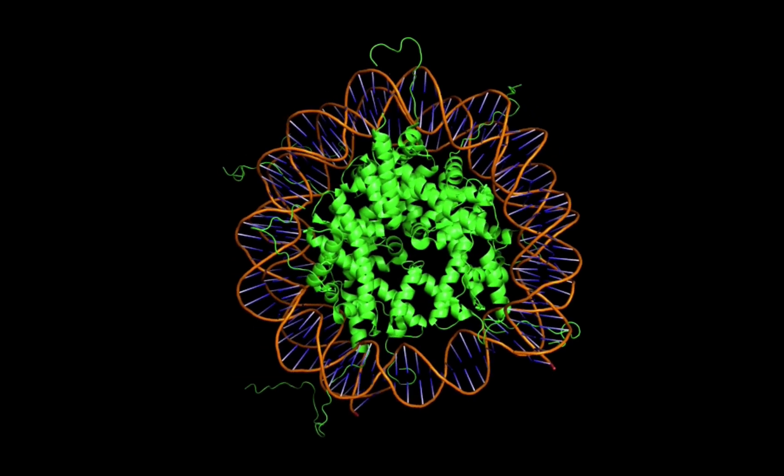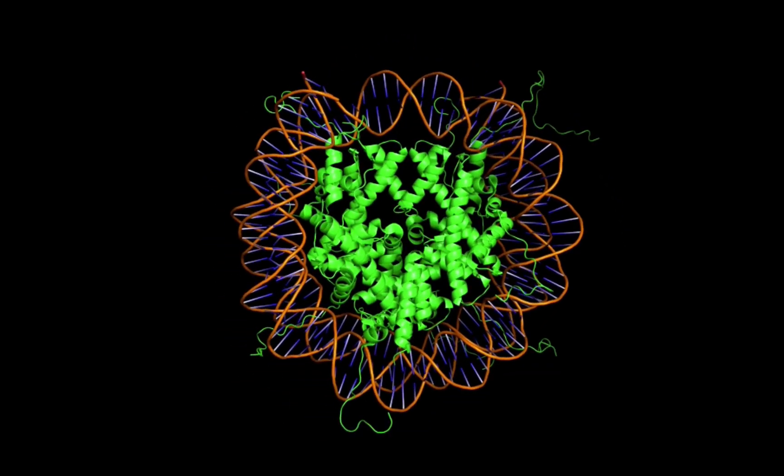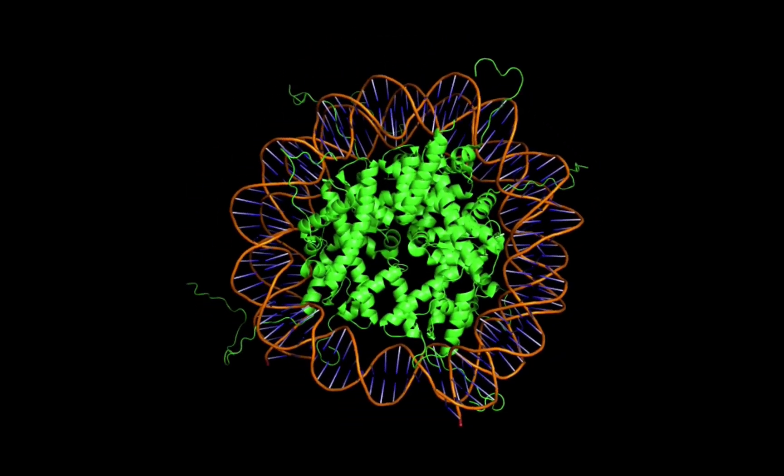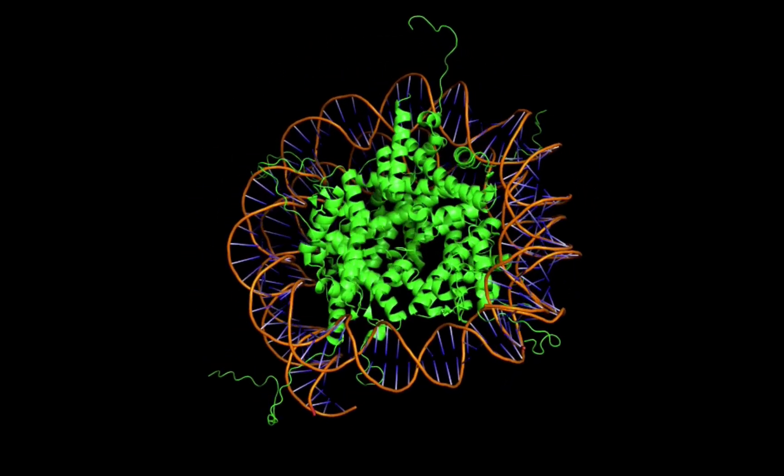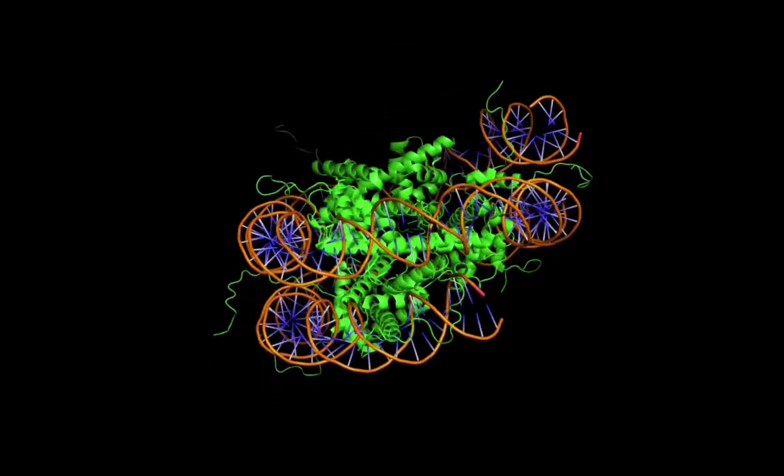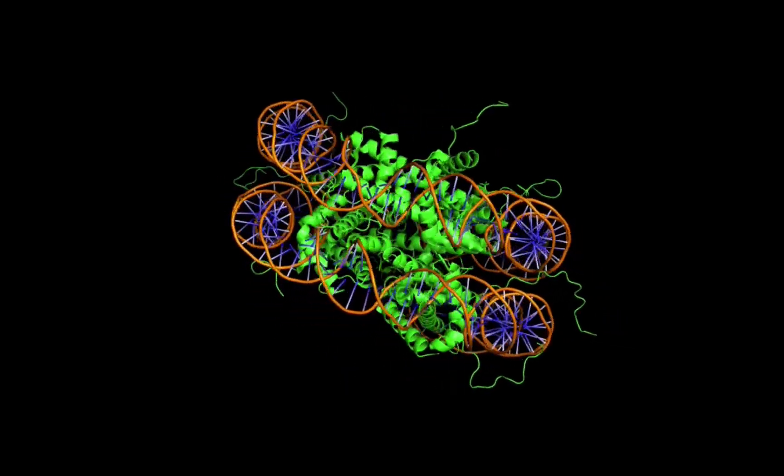If you unwound all of the DNA in your cell and lined it up end to end, it would be about 2 meters long. Considering the fact that each nucleotide is only about 60 nanometers, much smaller than even the wavelength of light, these are extremely long chains of nucleotides.